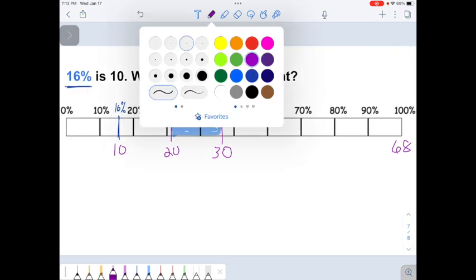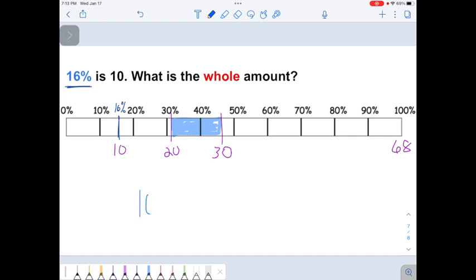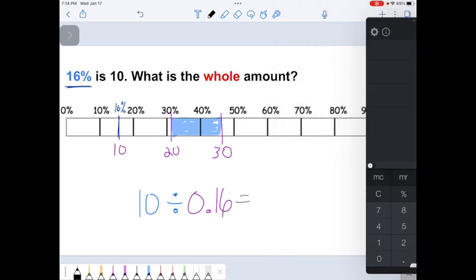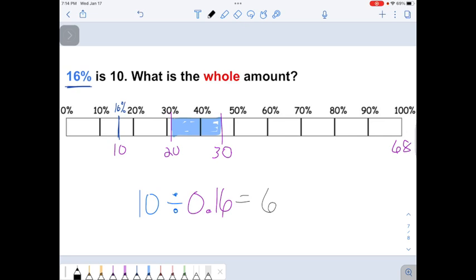So let's do the shortcut. 10 divided by 16% equals 10 divided by 0.16, 62 and a half. Really close to my answer. Would have been almost impossible to do with a percent bar, but with the shortcut, we can do it.